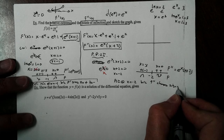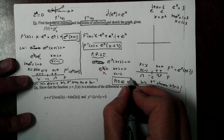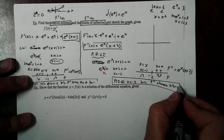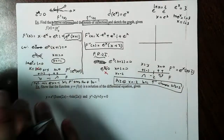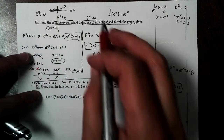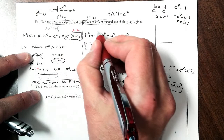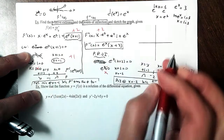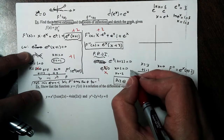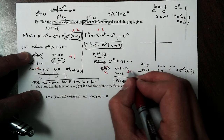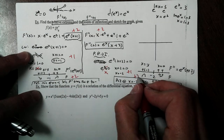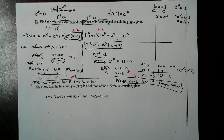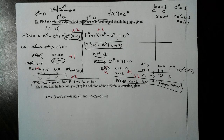On the AP test, this is the bulk of your score. The derivatives are probably worth two points apiece, getting your critical numbers is about one point apiece, and getting your answer with justification is worth two points. So there are a lot of points available here.